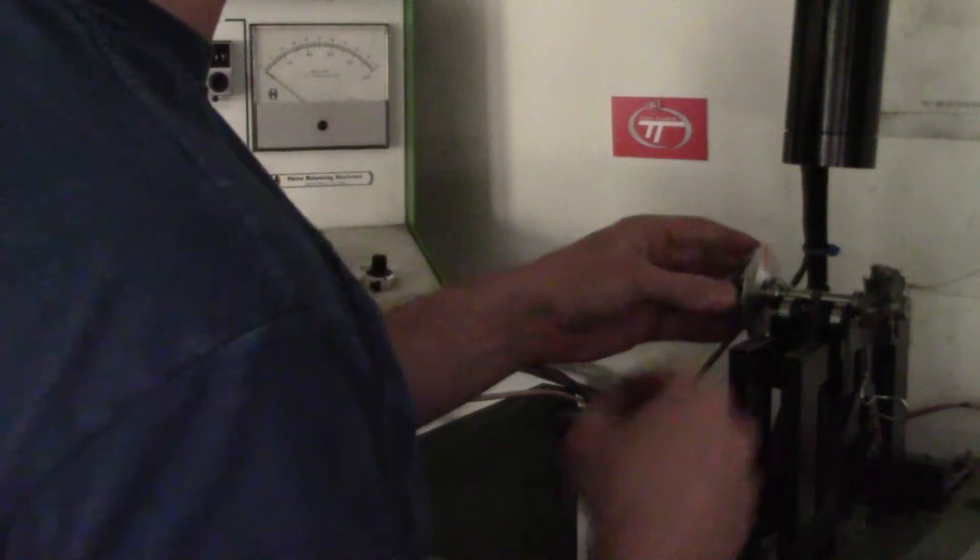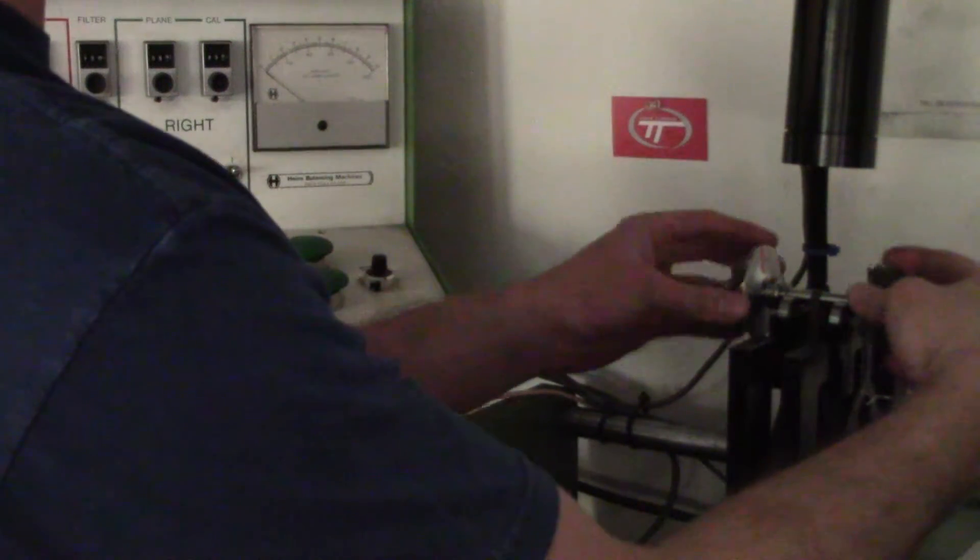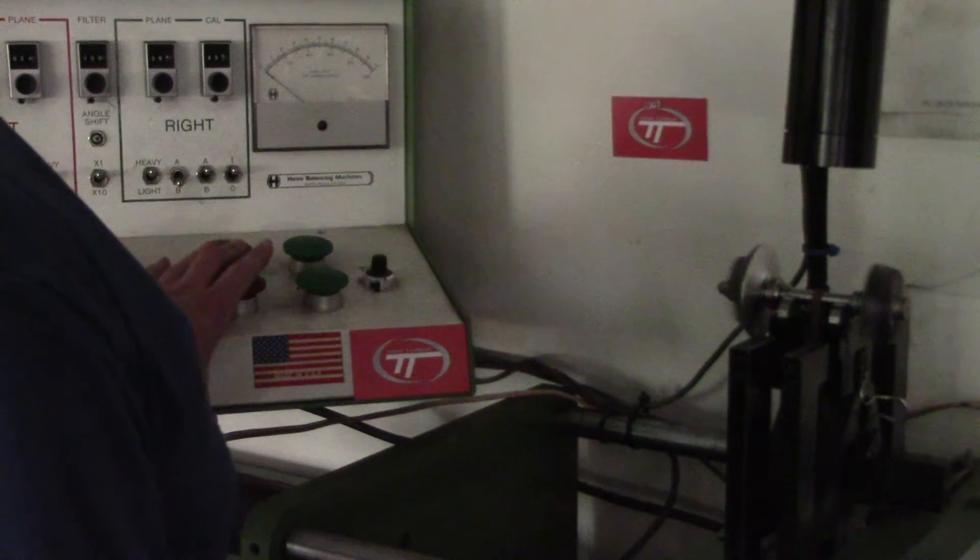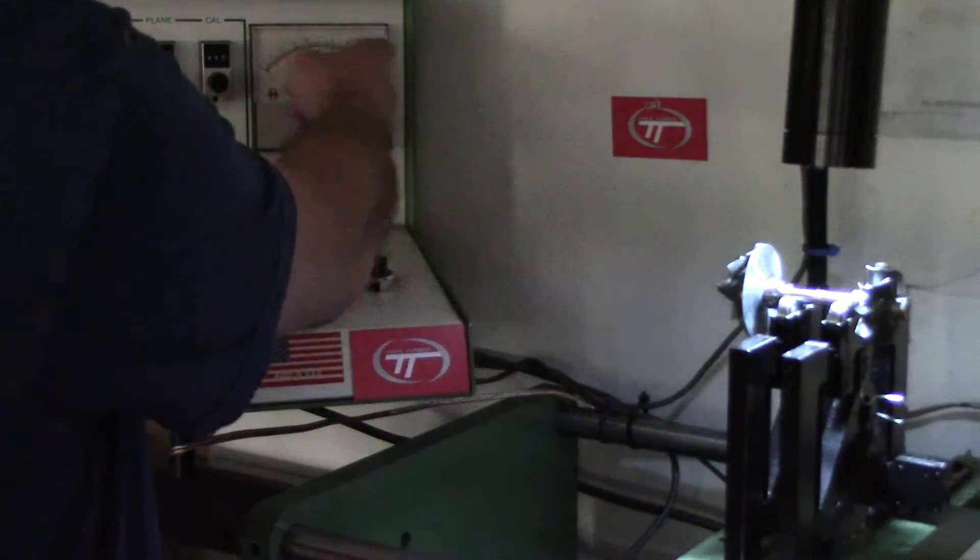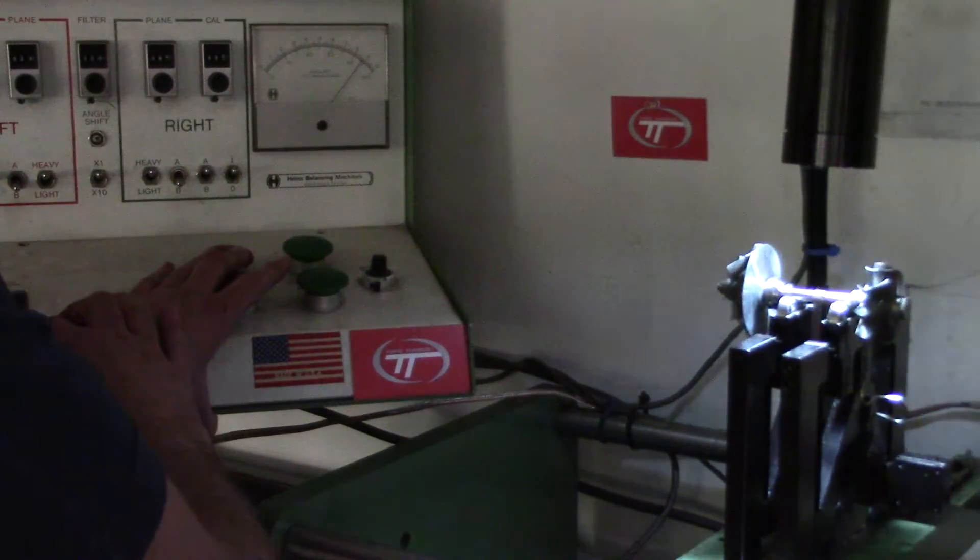So now that we have a known imbalance on there, remember this is a balanced rotor group. These are all fresh parts. Check it. It's off the scale on the first one. That's an imbalance. It's a major imbalance.